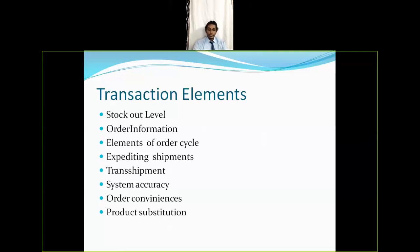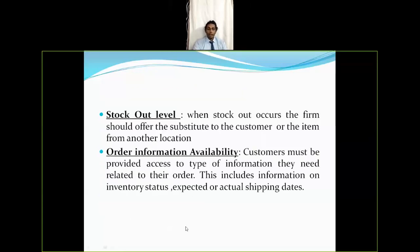The first transaction element is stock out level. When a stock out occurs, the firm should offer a substitute to the customer or source the item from another location. Since the market is highly competitive, if a customer orders a product and it is out of stock, we must provide a substitute — otherwise the customer will go to a competitor.